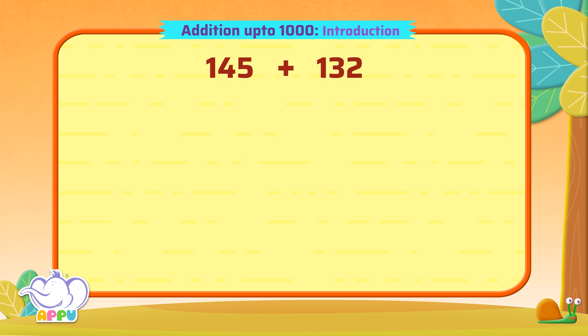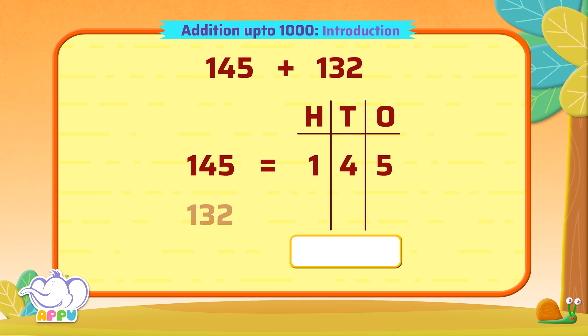145 plus 132. 145 has one hundreds, four tens, and five ones. 132 has one hundreds, three tens, and two ones.